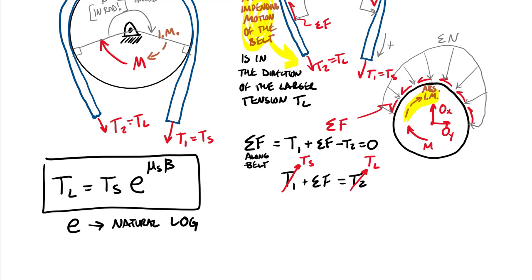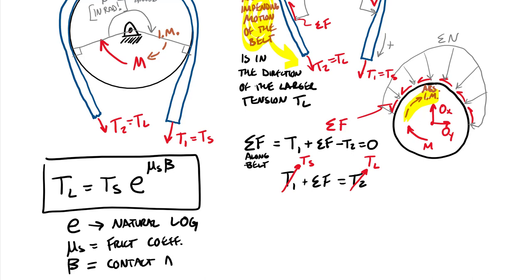For this topic it's best to cut to the chase. We end up with an equation: T sub L equals T sub S times e raised to the power of mu sub S times beta. Here e is the natural log base — raise e to a power using your calculator — where mu sub S is your static friction coefficient and beta is your contact angle in radians.